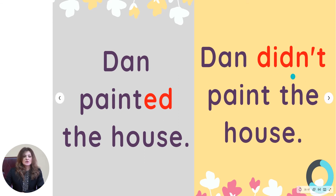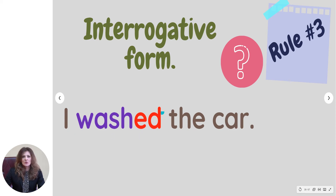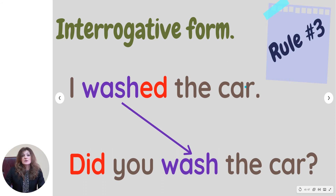Remember: if we want to make a negative sentence in the past simple, we simply use 'didn't' and the verb. The last rule we are going to learn today refers to the interrogative form — questions in the simple past. Look at the sentence: 'I washed the car.' If I add -ed to the verb, we refer to past actions. But to turn this into a question, we write 'did' and use the verb without -ed, because 'did' already shows us the action is in the past.